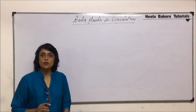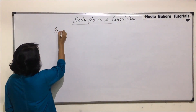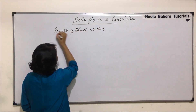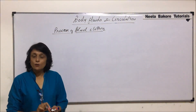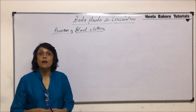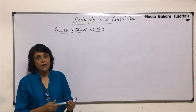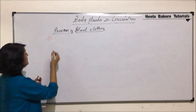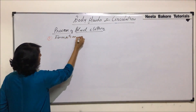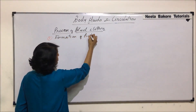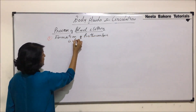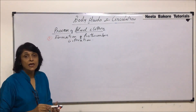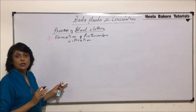We will now discuss the process of blood clotting. We will be discussing the short method first to understand what exactly happens, and then we will take the detailed method where all factors and their involvement would be understood. When we talk of this method of blood clotting, we divide it into three steps. The first step is formation of prothrombin activator.